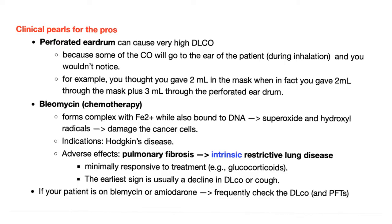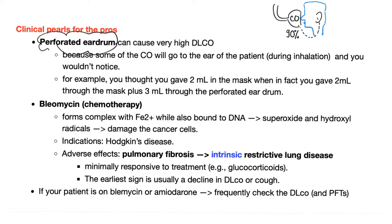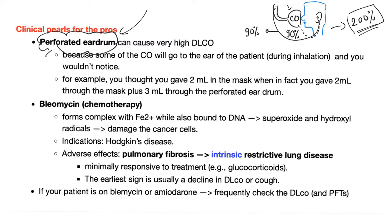Clinical pearls: if a patient has a perforated eardrum and you put the mask on their nose delivering 90% CO, you'd expect 90% DLCO. But some of the CO will travel from the machine through the perforated eardrum into the blood, picked up by hemoglobin — so the measured DLCO could be 200% of predicted, meaning double the predicted value. This is a false elevation seen only with a perforated eardrum.